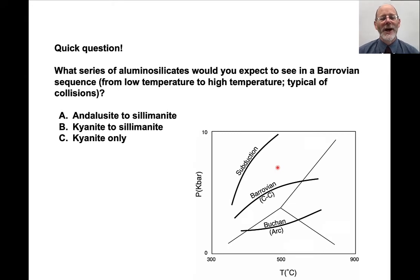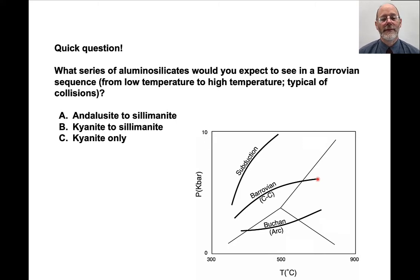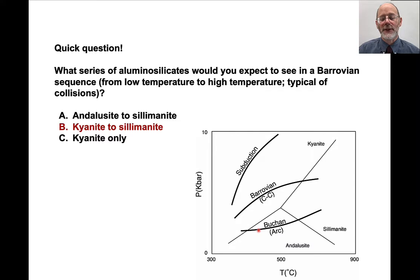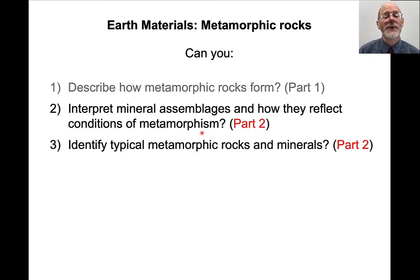What series of aluminosilicates would you expect to see in a Barrovian sequence? If you're walking in the field and you transition from lower to higher PT conditions, you need to know the stability fields for the aluminosilicates. With kyanite, sillimanite, and andalusite plotted, you can see that the Barrovian sequence transitions from the kyanite stability field to the sillimanite stability field. Andalusite is a low-density, low-pressure mineral, so it forms only in low-pressure environments like contact metamorphic systems. Kyanite is characteristic of subduction zones — high pressure and relatively low temperature. At this point, students should be able to discuss mineral assemblages and how they reflect conditions of metamorphism, and have a sense of what typical metamorphic rocks and minerals look like.